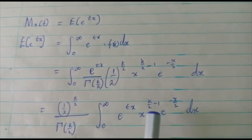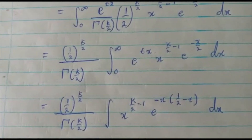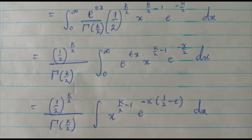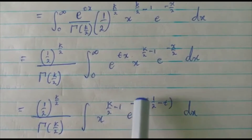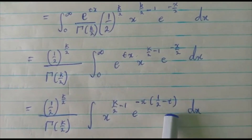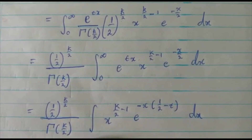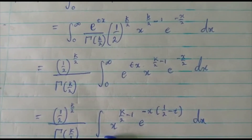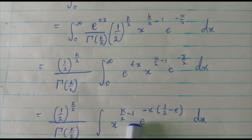We join them using the laws of indices, and it becomes e to the power negative x times (one half minus t) dx. Our x term remains x to the power k over 2 minus 1.